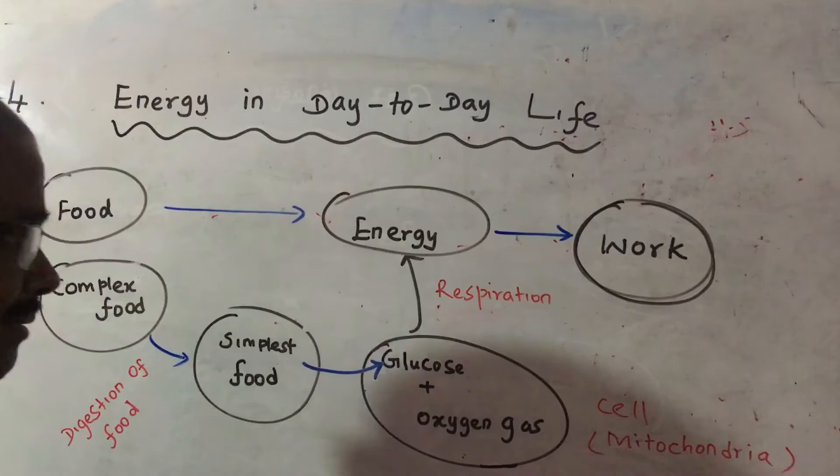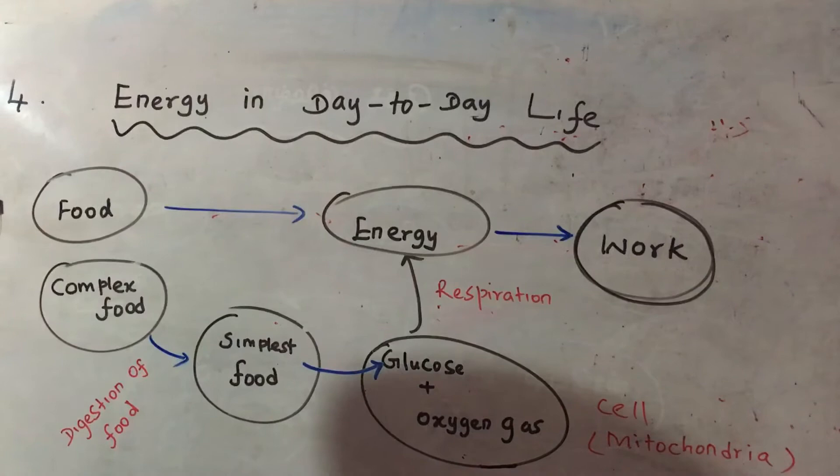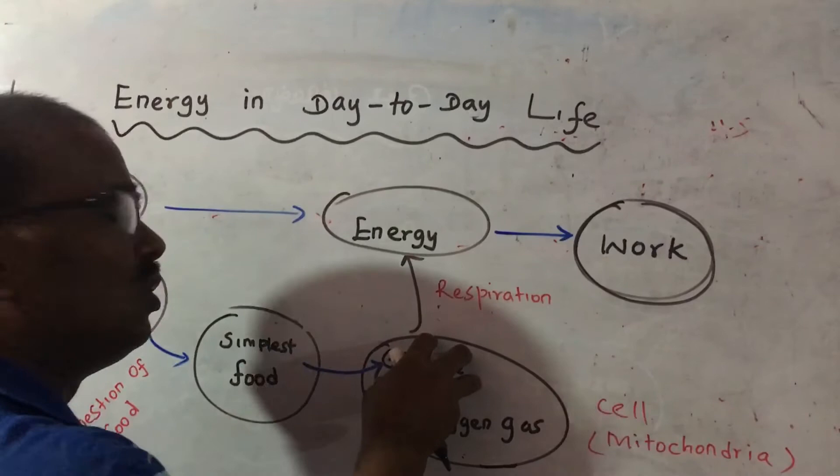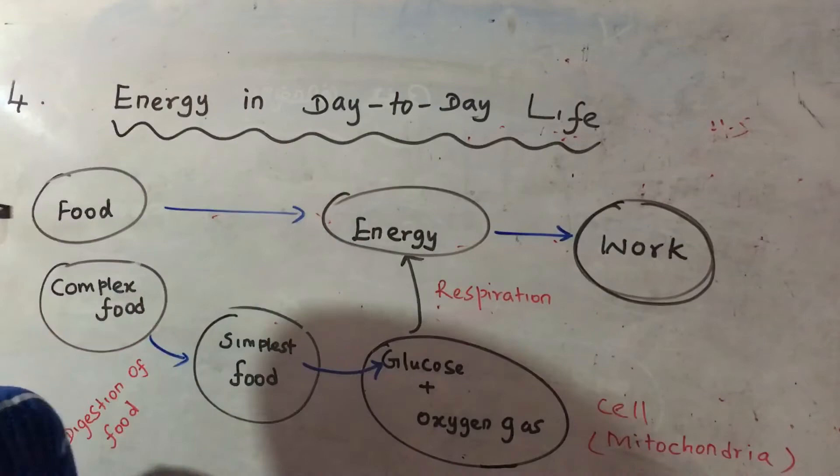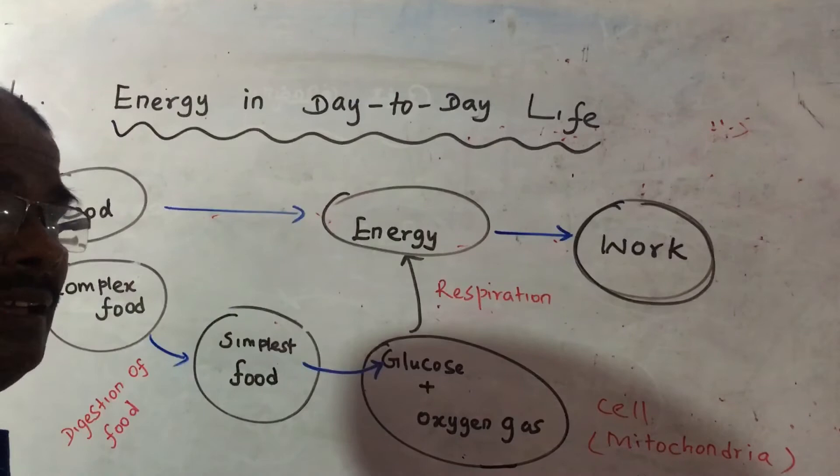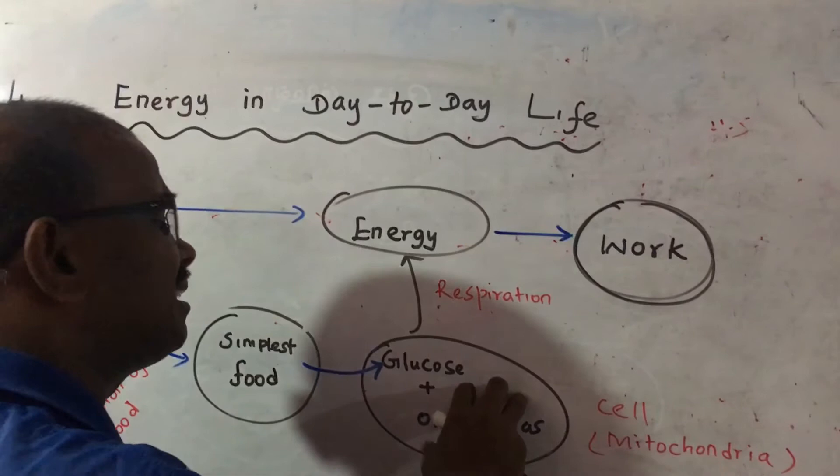This is the absorbable form. For example, the simplest form of carbohydrate is glucose. That glucose reacts with oxygen gas. Oxygen gas is inhaled during inspiration. We take oxygen gas. This oxygen gas reacts with glucose in the cell, especially in the mitochondria.